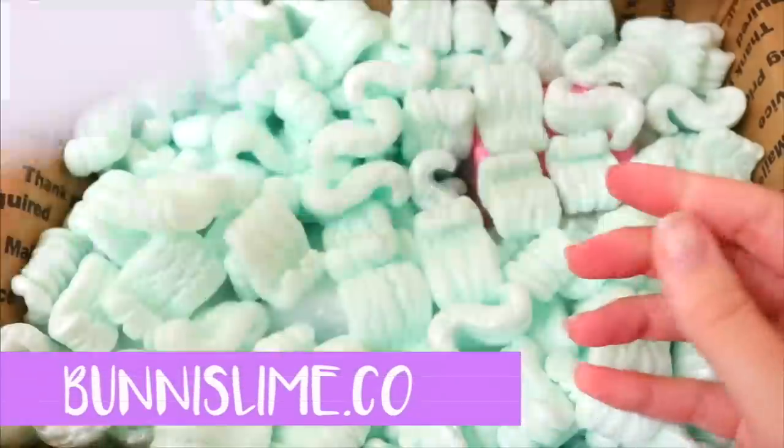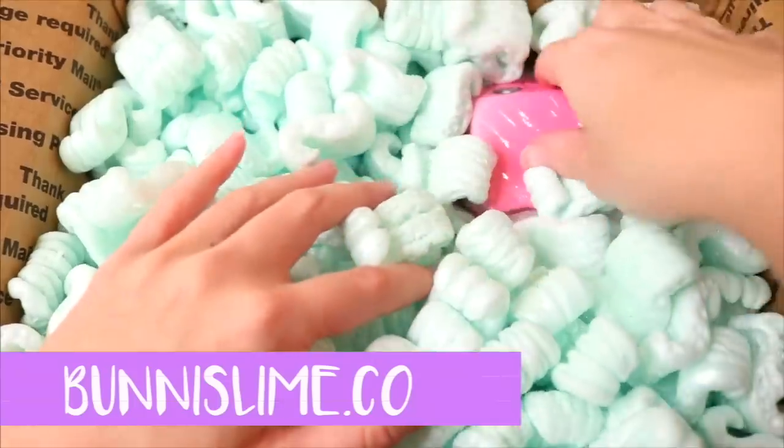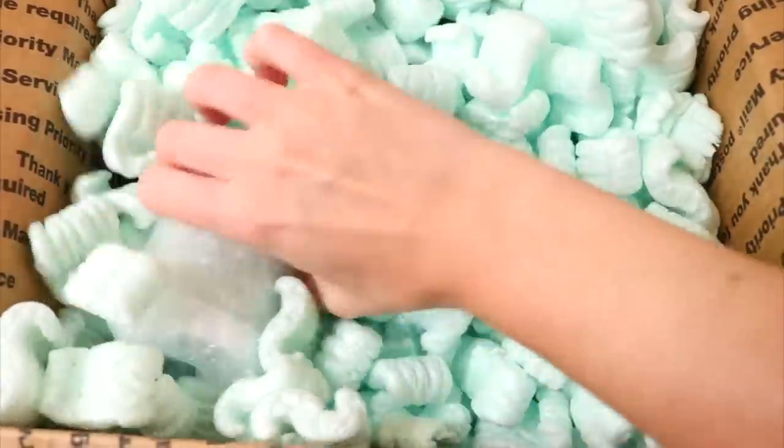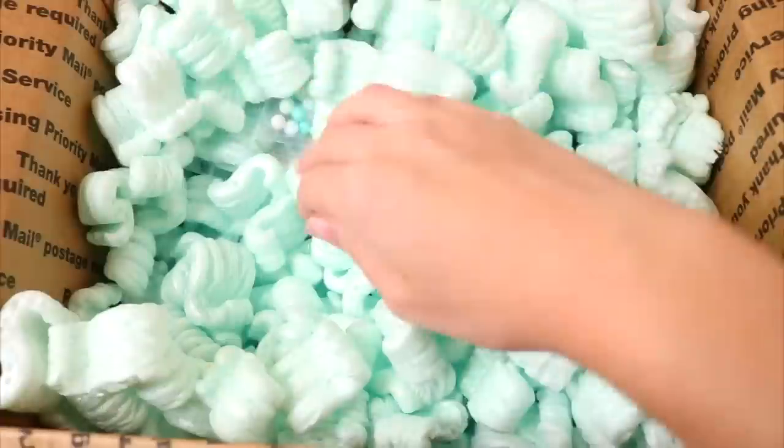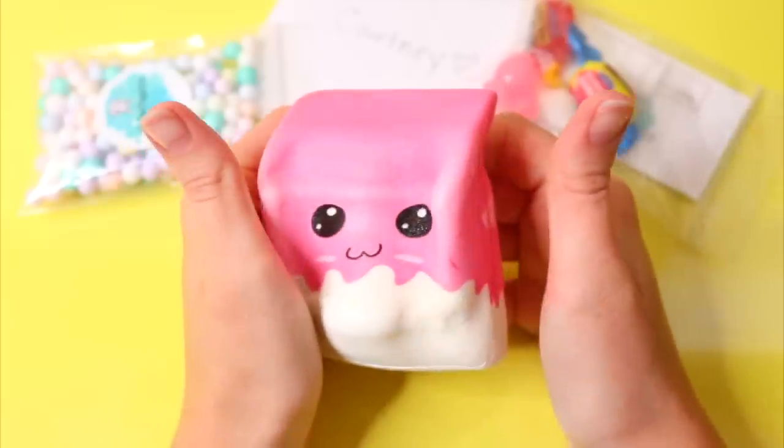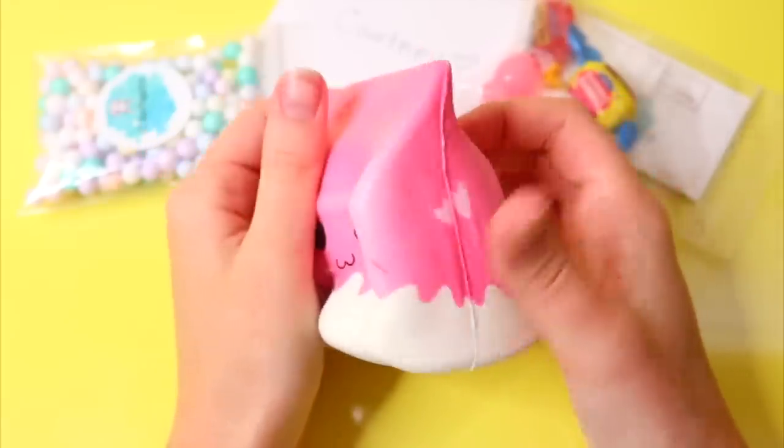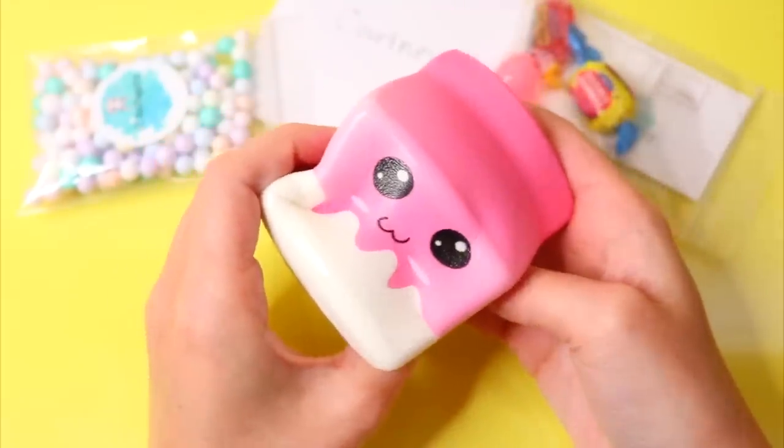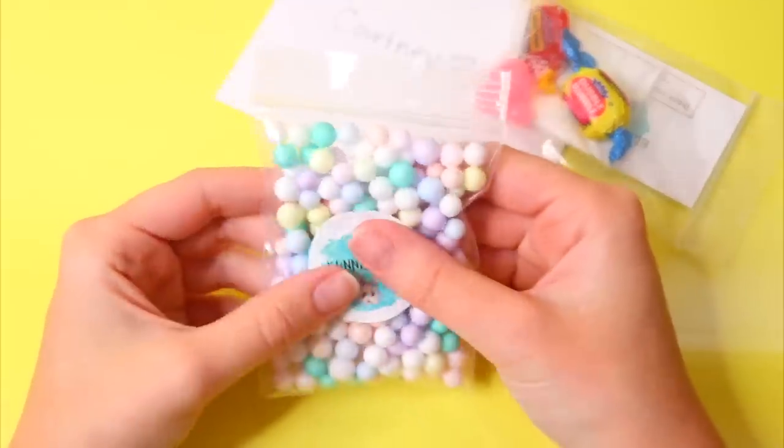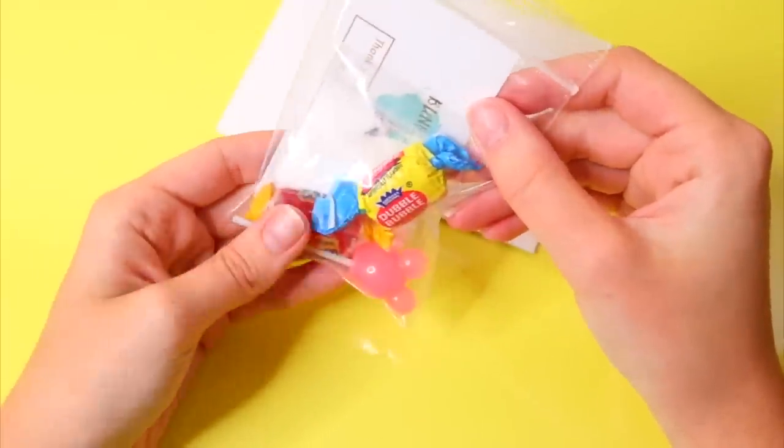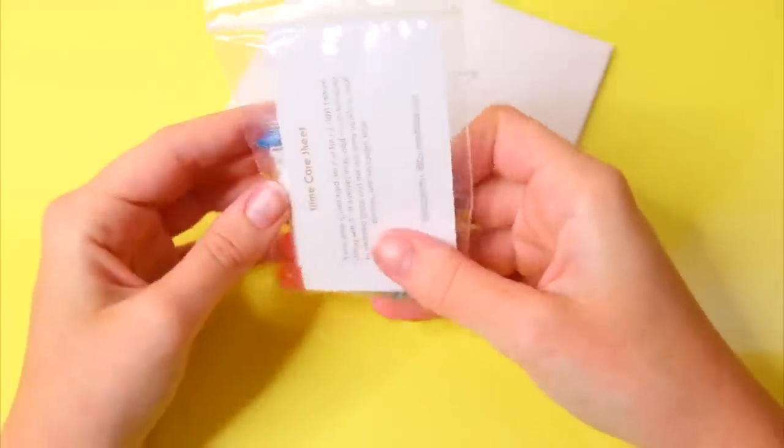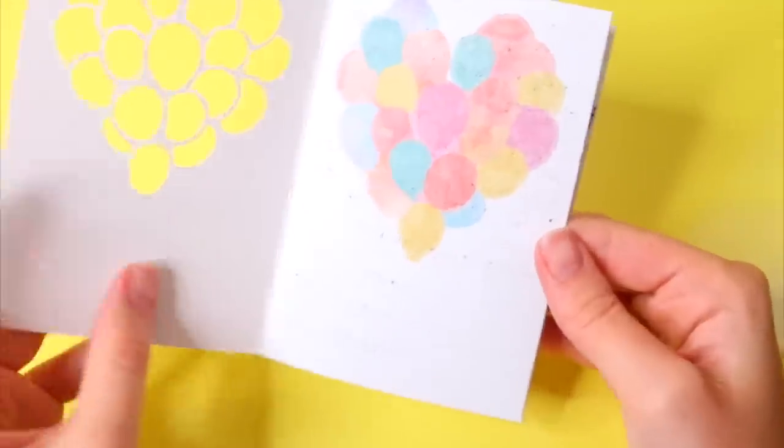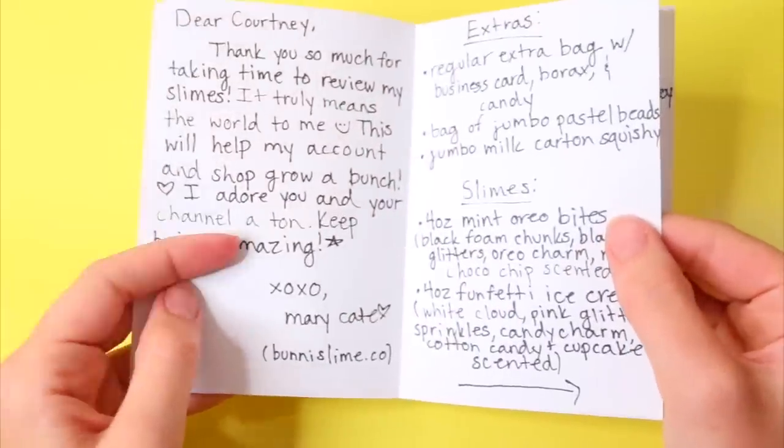This last package is from bunnieslime.co and again, I am so impressed with you guys. You guys stepped up your game. This was another package that was packaged super well, really nicely. Everything was bubble wrapped, some amazing extras. She sent this slow rising squishy and this one was so cute. I loved it. And she also sent some jumbo foam beads. I love this pastel color. They're so pretty. And also some extras and a beautiful and really sweet card. So I absolutely loved the card and I loved just the whole design of the card. It was really cute.